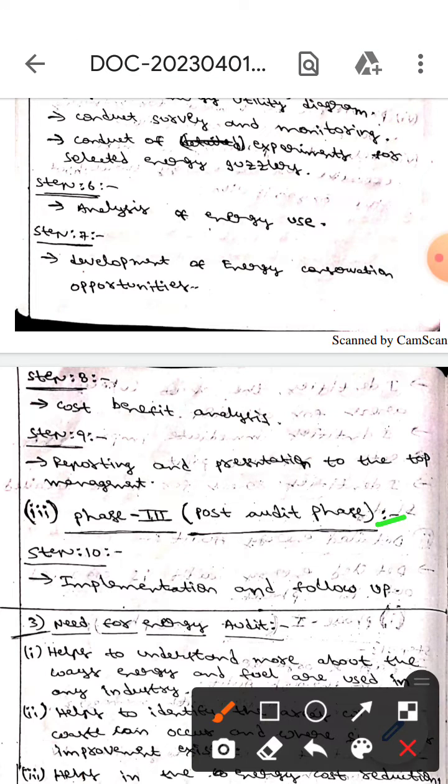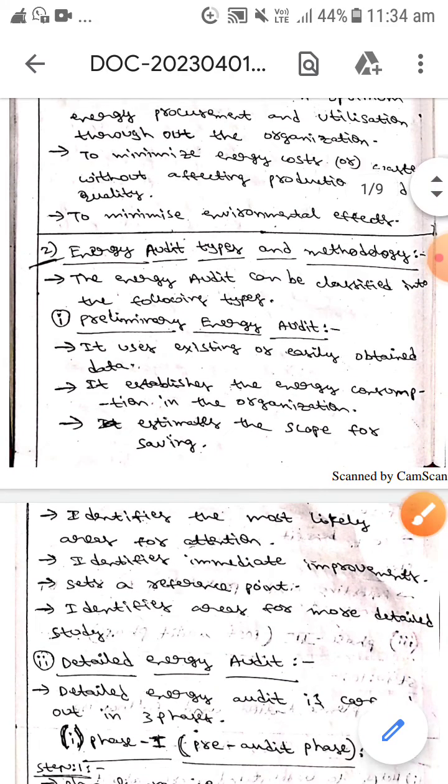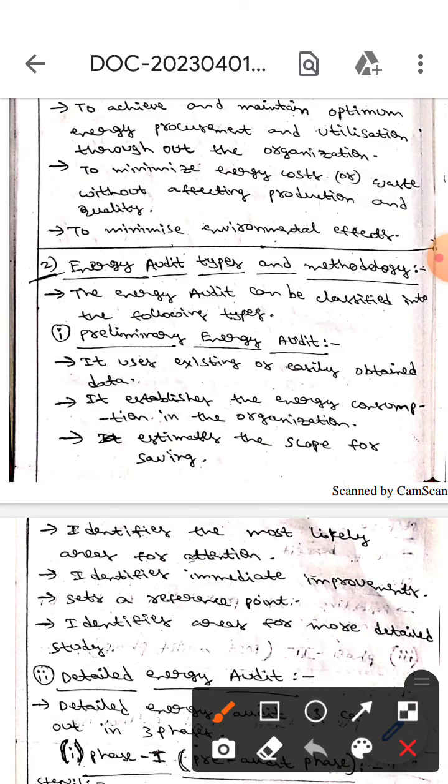The next phase is phase three, the post audit phase. Here there will be one step, step ten, which is implementation and follow-up. This is all about the energy audit types and methodologies. I hope you understand guys, thank you.